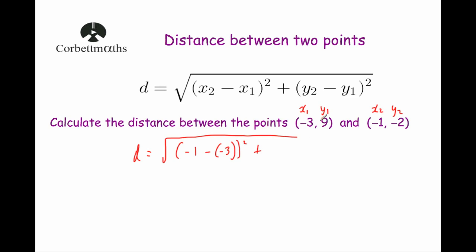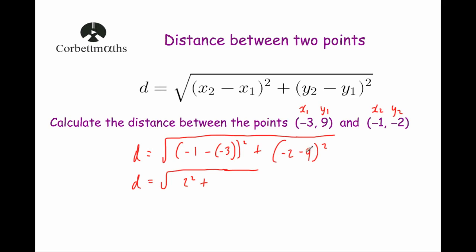Then plus y2 minus y1, so that's negative 2 subtract 9, squared. Working out the brackets: minus 1 minus minus 3 is minus 1 plus 3, which is 2, so we have 2 squared. And minus 2 take away 9 is negative 11, so we have minus 11 squared. Squaring these: 2 squared is 4, and minus 11 squared is 121.